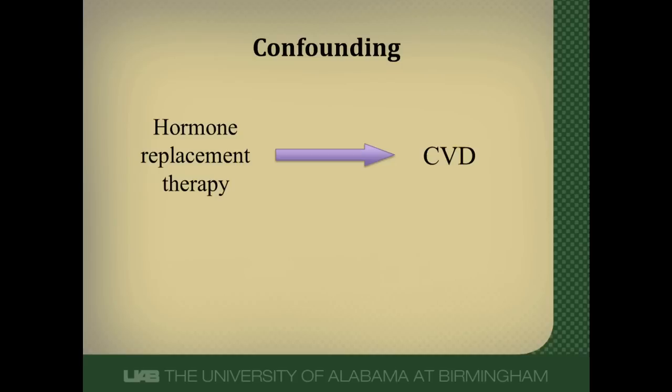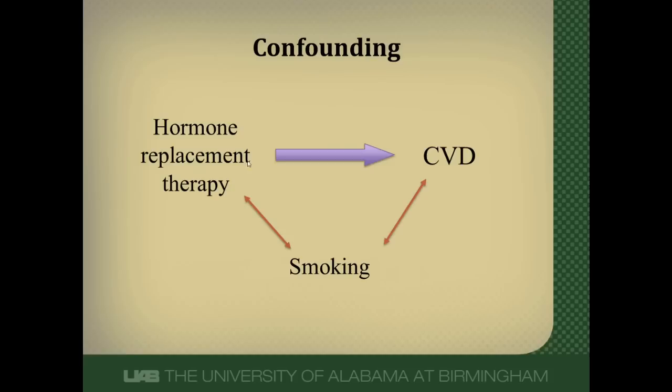Let's say I'm trying to do a study to understand the effect of hormone replacement therapy on cardiovascular disease. There will be a group of women who are on hormone replacement therapy and a group who aren't, and I'll follow them to see how many develop cardiovascular disease. Smoking could potentially be a confounder — it's related to cardiovascular disease, and it's also likely related to being on hormone replacement therapy. Smoking is going to be unequally distributed between the two groups, so it would be a potential confounder. It's related to both the outcome and the exposure, but is not in any way in the causal pathway from hormone replacement therapy to cardiovascular disease.